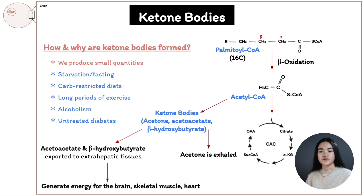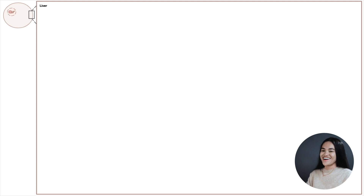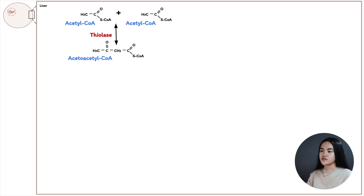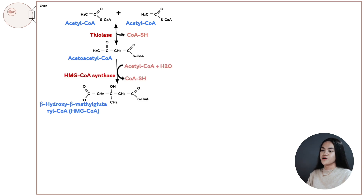Now let's go through how we form ketone bodies in the liver from acetyl-CoA. The first step is combining two molecules of acetyl-CoA to produce acetoacetyl-CoA, and this is catalyzed by thiolase — removing a CoA here. Then acetoacetyl-CoA joins with another acetyl-CoA molecule, producing beta-hydroxy-beta-methylglutaryl-CoA, or HMG-CoA for short, and this is done by HMG-CoA synthase.